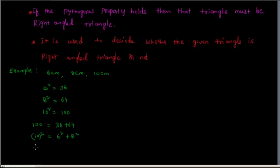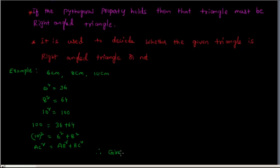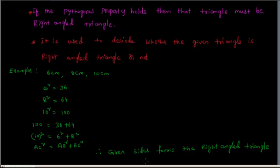This is clearly in the form AC squared equals AB squared plus BC squared, which is the Pythagoras property. So the triangle having sides 6 cm, 8 cm, and 10 cm is a right-angled triangle. Therefore, you can conclude that the given sides form a right-angled triangle. I hope that you understand.